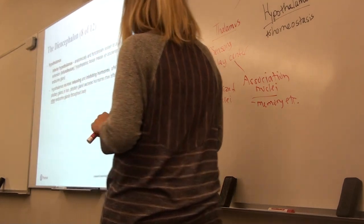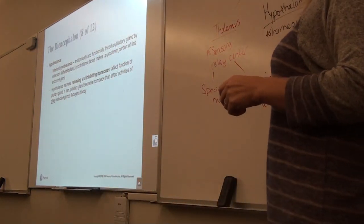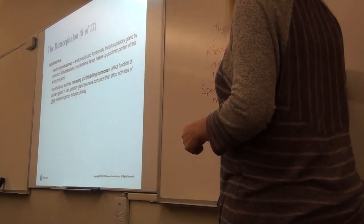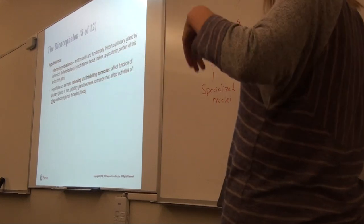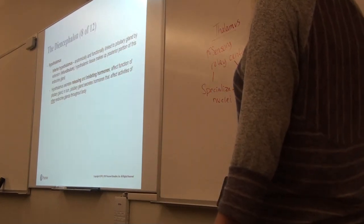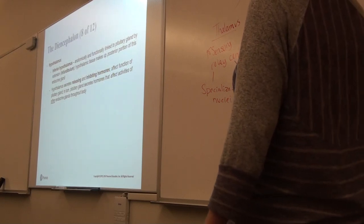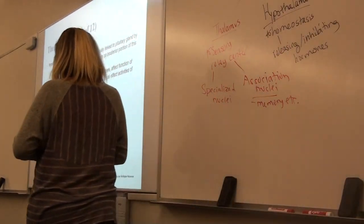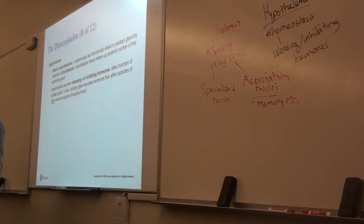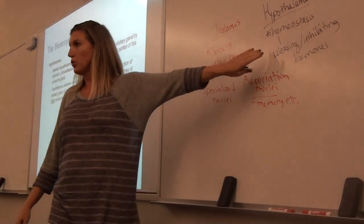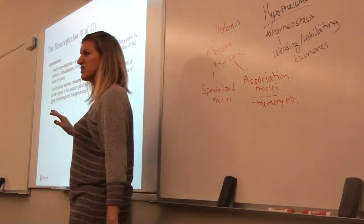The inferior hypothalamus releases hormones called releasing and inhibiting hormones — we'll talk about these more when we do the endocrine system. There's a stalk hanging off of the hypothalamus called the infundibulum that links the pituitary gland to the brain. The pituitary gland is the master gland in the body, which is why the hypothalamus plays such a huge role in linking our endocrine system and nervous system together.